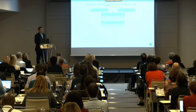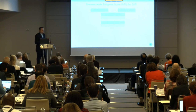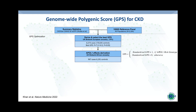Regarding our work on CKD risk within eMERGE: the first year was designed to prioritize polygenic risk scores for implementation. Being a nephrologist, I felt an obligation to tackle the polygenic risk for CKD, though I was initially skeptical because SNP-based heritability of eGFR is relatively low, and SNP-based heritability of CKD as a binary trait is even lower.